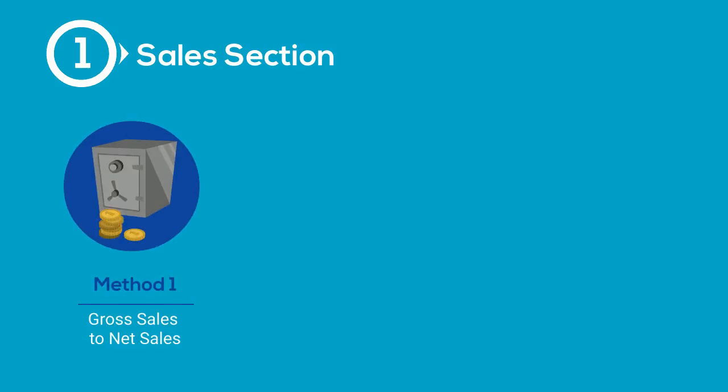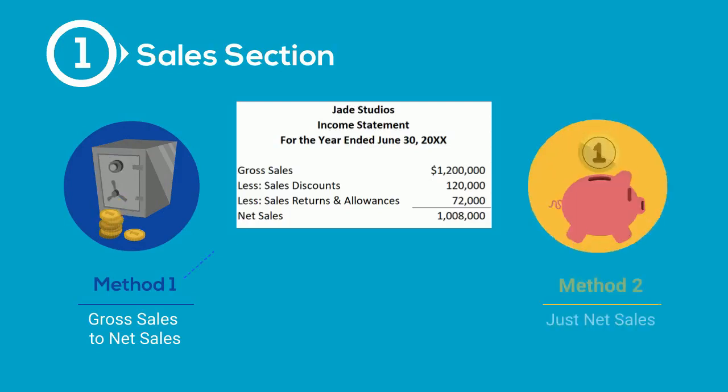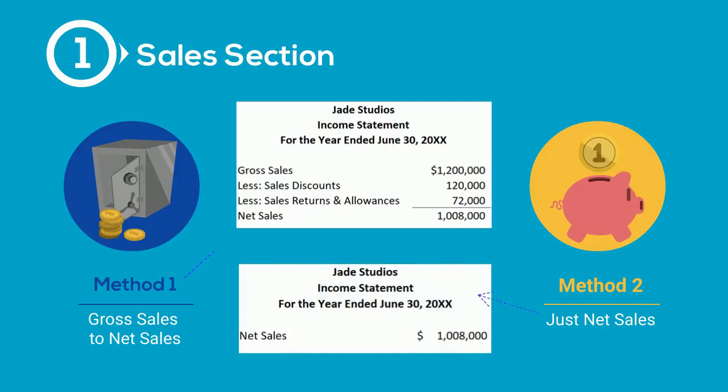This new format starts out with a section related to the sales of the company. There are two ways you can show this section. The first is to provide details about the revenue accounts related to sales — you would start with sales revenue and then deduct sales discounts and sales returns and allowances to arrive at net revenue. The second way is to eliminate the details and start instead with the net revenue figure. Regardless of which presentation is chosen, the other information for this section deals with the cost of the sale.